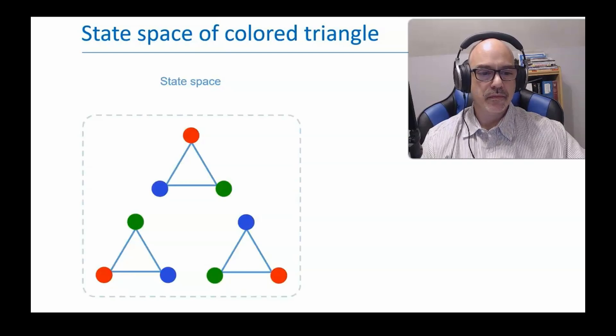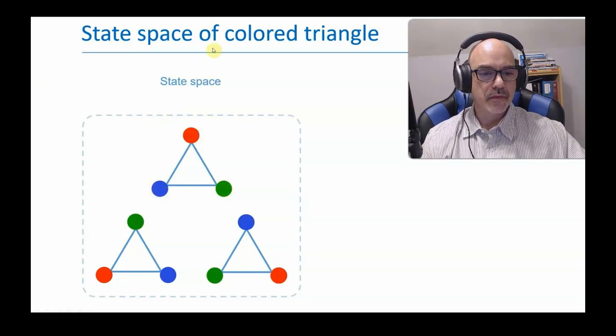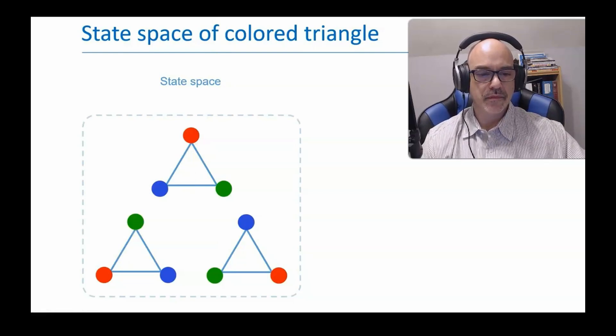We'll start discussing symmetry in terms of a simple example. Consider an equilateral triangle with its three vertices colored red, green, and blue. It can be in any one of these three possible orientations, or in other words, three possible states.